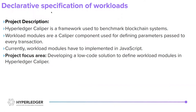A bit of an introduction about Hyperledger Caliper: it is a framework for benchmarking blockchain systems. When Hyperledger Caliper is run over a blockchain system, the system is subjected to a large number of transactions and towards the end a report is generated with all the relevant benchmarking parameters. Each transaction is created or initialized by a workload module. This project focuses on simplifying the implementation of those workload modules, building out a more declarative specification and converting it into more of a low-code solution.